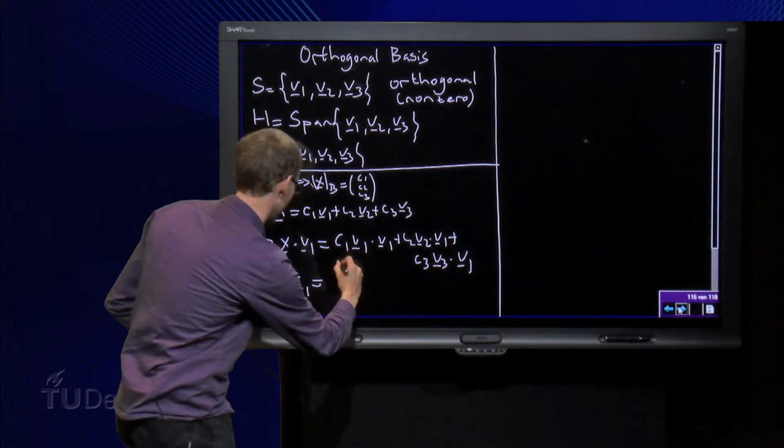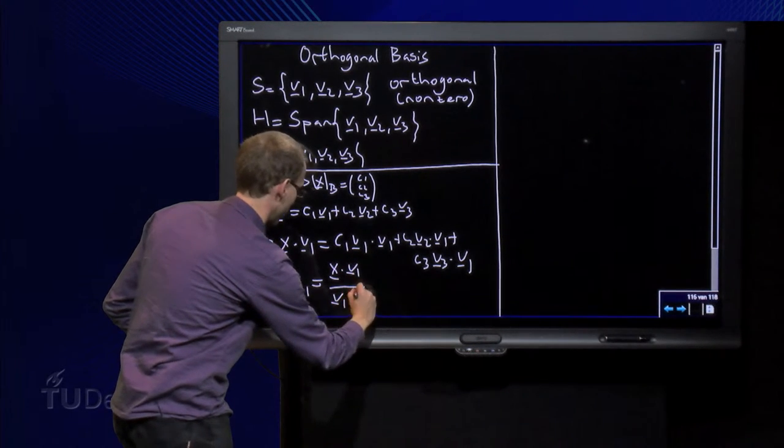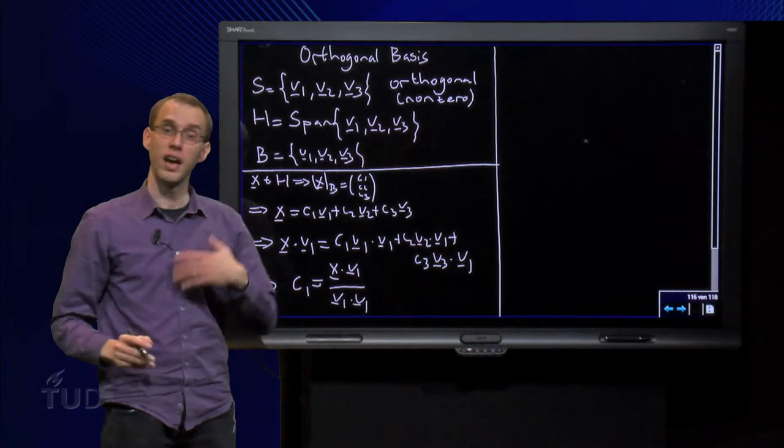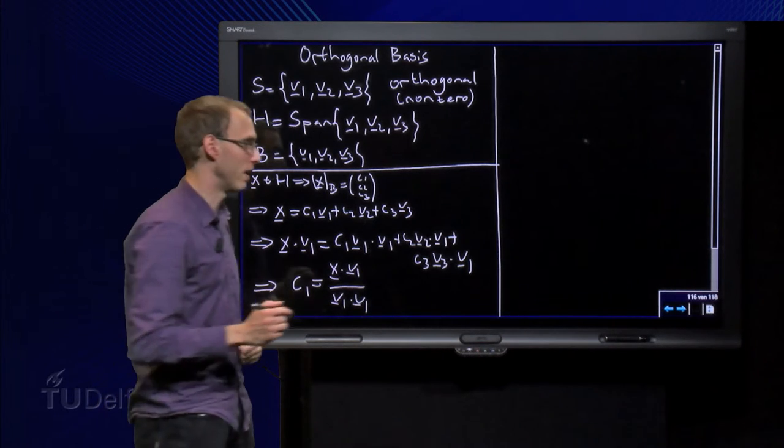c1 equals x in v1 divided by v1 in v1. And we can do the same for the other weights for c2 and c3 in a similar way.